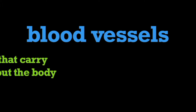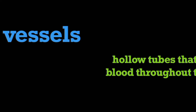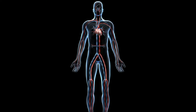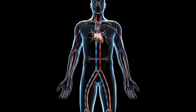In this program, we are going to learn about different types of blood vessels. Blood vessels are hollow tubes that carry blood throughout the body. Blood vessels are part of an organism's cardiovascular system.